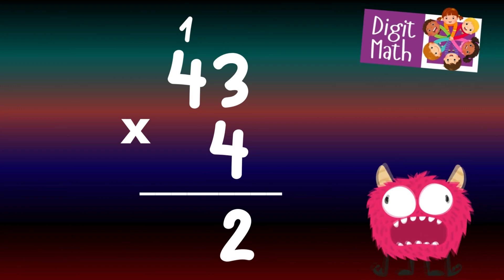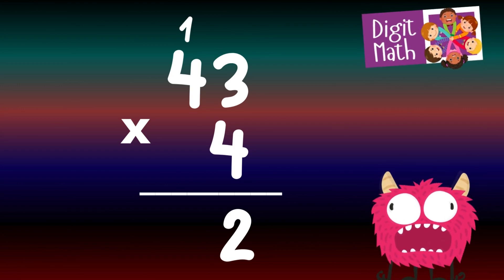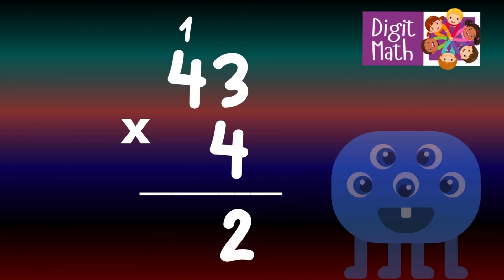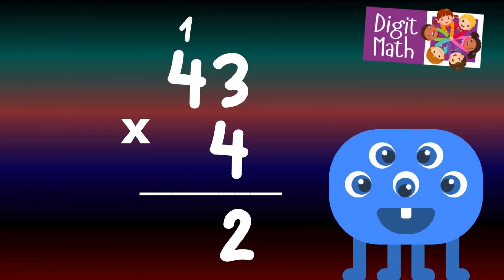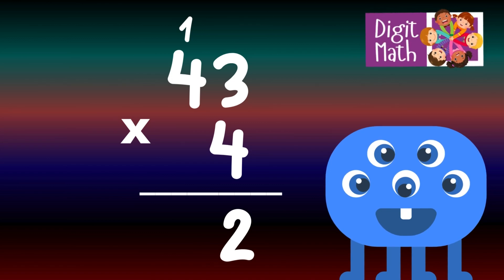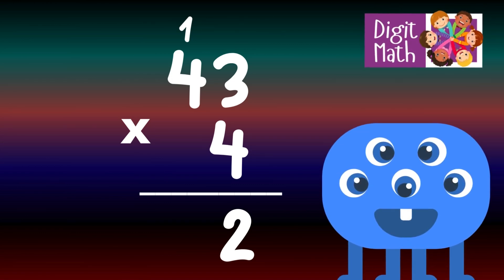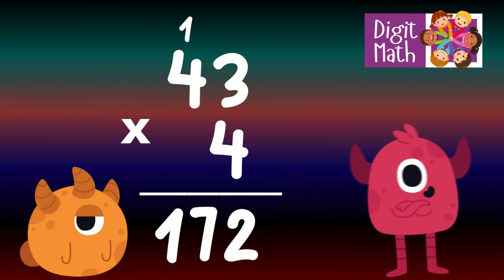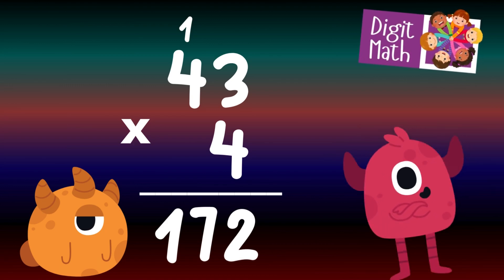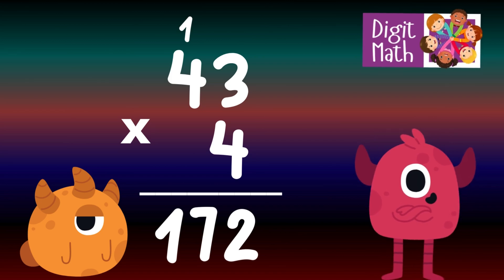Place 2 in the Units column and carry over 1 to the Tens column. In the Tens column, multiply 4 by 4, which equals 16. Add the carried over 1 to 16, making 17. Place 17 in the Tens and Hundreds column. So the final result is 43 times 4 equals 172.